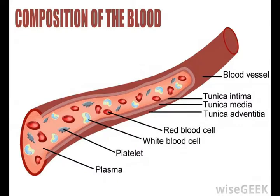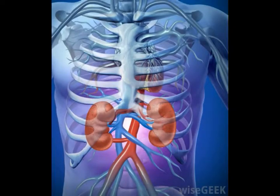Blood travels into the kidneys to be filtered, and then the filtered blood exits the kidneys through the peritubular capillaries. These capillaries completely surround the tubules, which contain all of the fluid and particles that have been removed from the blood. It is through the peritubular capillaries that the important nutrients needed by the body are reabsorbed back into the blood.